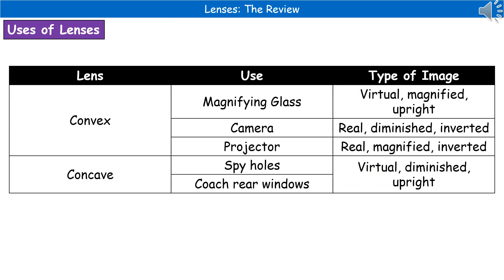The last thing to consider is other uses of lenses. We've looked at correcting eyesight, but we use convex and concave lenses for other purposes too — and you need to know the use and the type of image it generates. For convex lenses: in a magnifying glass, you get a virtual image that's magnified and upright; in a camera, it's a real image that's diminished and inverted; in a projector, it's a real image that's magnified but still inverted. For concave lenses — used in spy holes and rear windows on coaches — they both generate a virtual image that's diminished but upright.